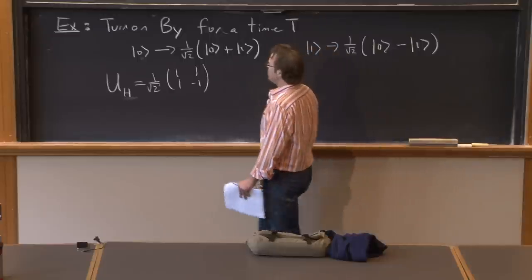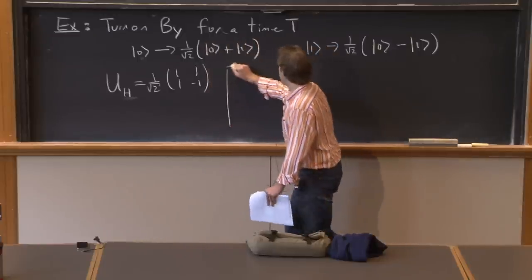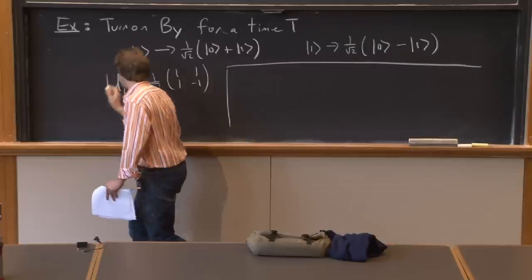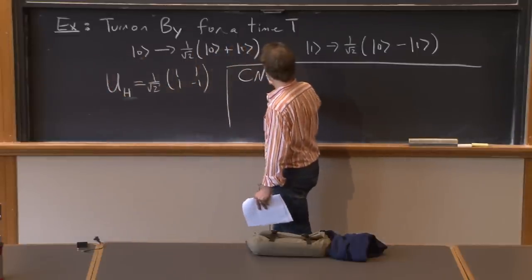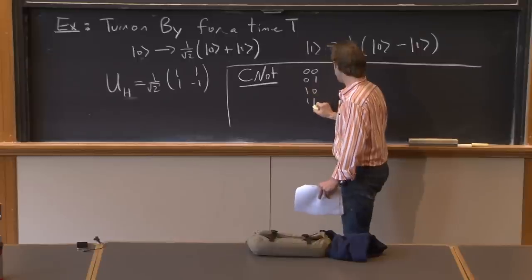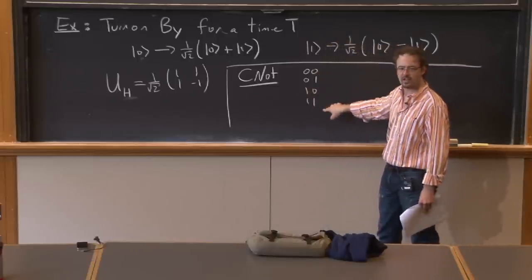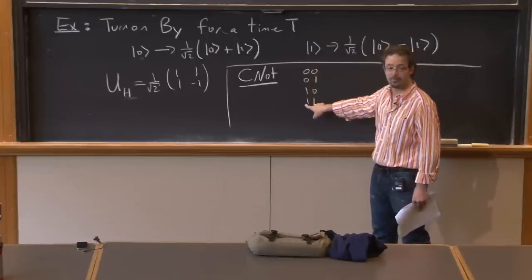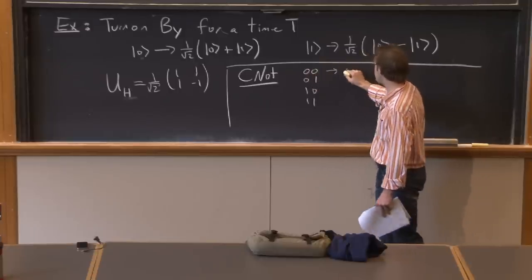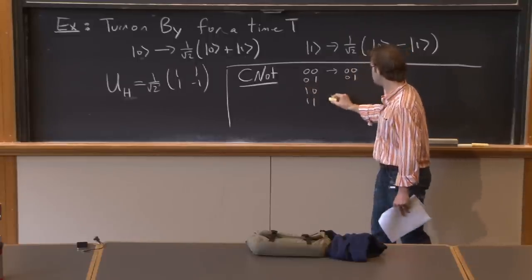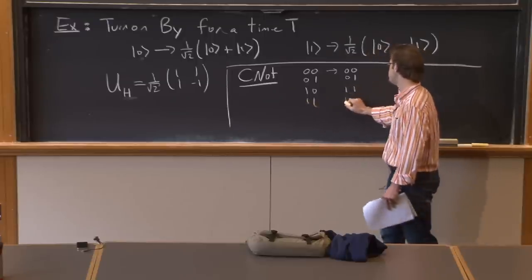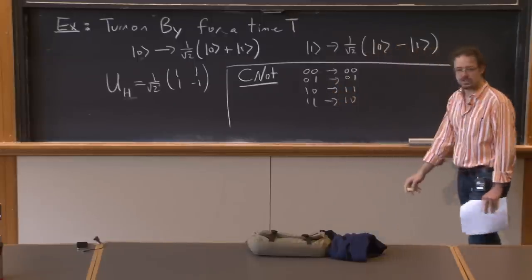Another operation is called CNOT — controlled NOT. It takes |0,0⟩, |0,1⟩, |1,0⟩, and |1,1⟩, and applies a NOT to the second qubit if and only if the first qubit is 1. So |0,0⟩ → |0,0⟩, |0,1⟩ → |0,1⟩, |1,0⟩ → |1,1⟩, and |1,1⟩ → |1,0⟩.